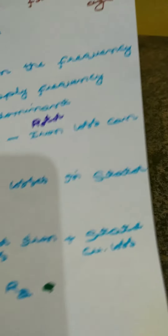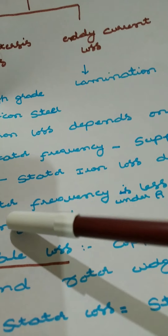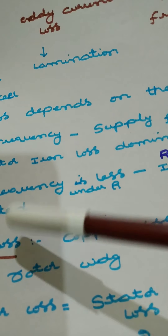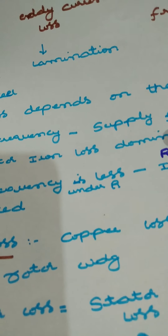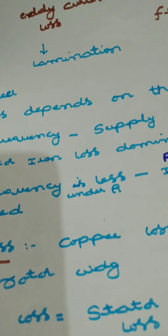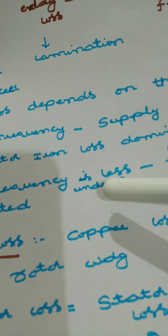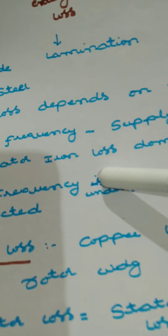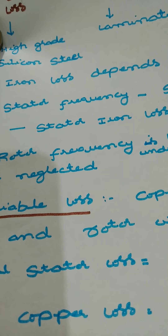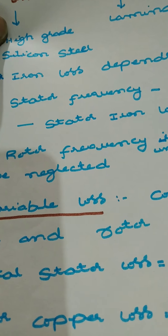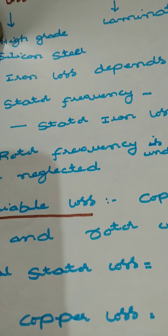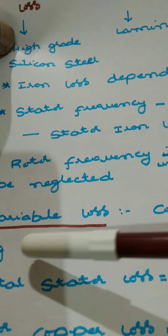Rotor core loss can be neglected because under running conditions frequency is less. You cannot neglect stator core loss because stator frequency is equal to supply frequency — due to that, stator core loss is more. You can neglect only the rotor core losses. Variable losses consist of copper losses in the stator winding and copper losses in the rotor winding, because they depend on the load condition. Current in the stator and rotor is changing, therefore copper loss is a variable phenomenon.